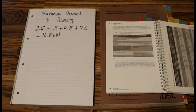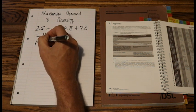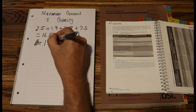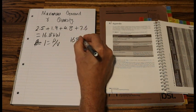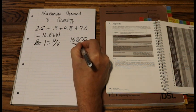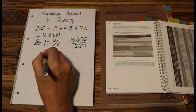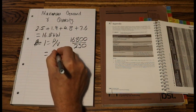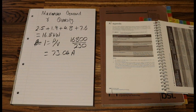Now we need to work out our current. So we'll use our formula of P equals I times V, transpose that, so we do power divide volts equals current. So let's input those numbers. So 16,800 over 230. That is going to equal 73.04 amps. So that's my total current.